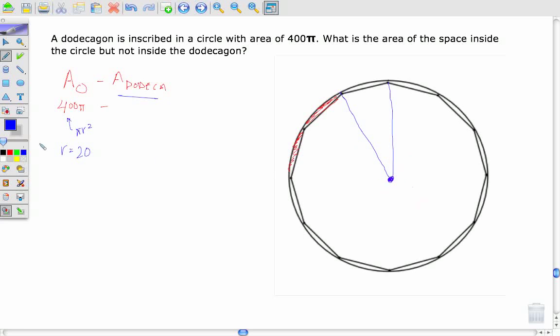A dodecagon is a 12-sided figure. So if the angles around a circle equal 360 degrees and there are going to be 12 of them because there are 12 sides of my figure, that means each of these interior angles here is going to be 30 degrees. So this is 30 degrees here.